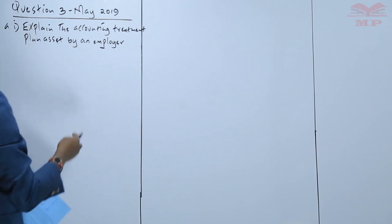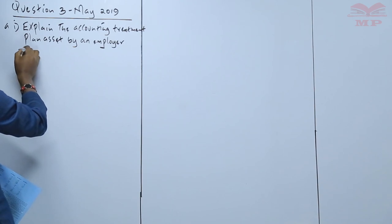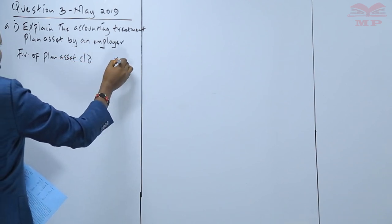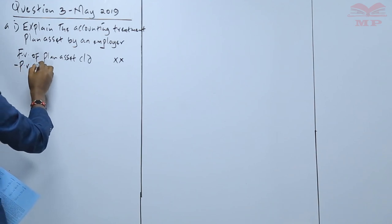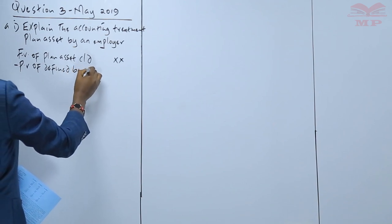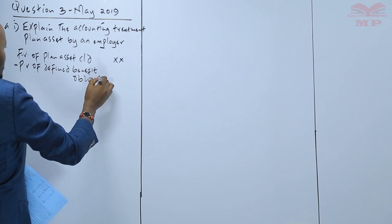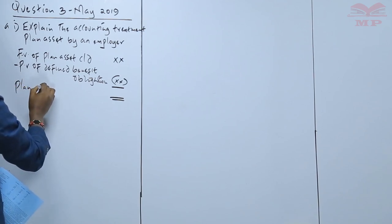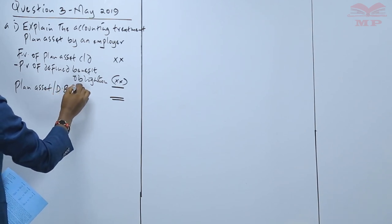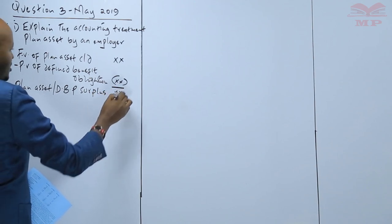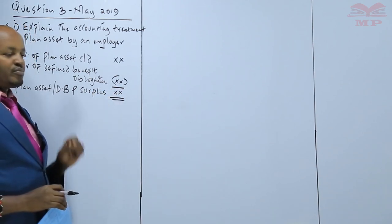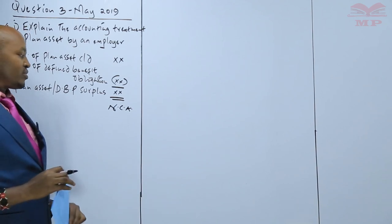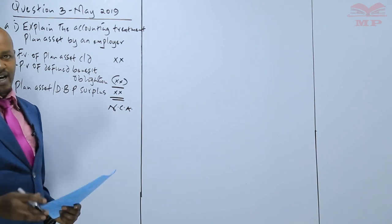To quantify the plan asset, we take the fair value of the plan asset at the end of the year, and then we less the present value of the defined benefit obligation. The difference between these two values is the plan asset, or what is referred to as the defined benefit pension surplus. This particular plan asset at the end of the year should be accounted for by the employer as part of the non-current asset in the statement of financial position.